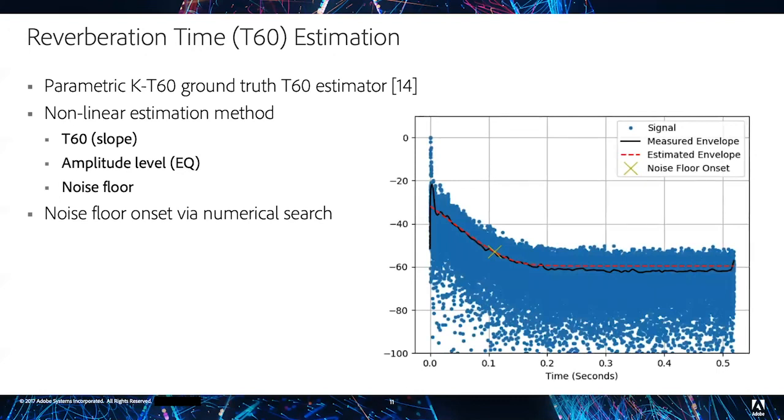To visualize this process, we show an impulse response on a log scale with blue dots, the measured amplitude envelope with a black line, the estimated parametric representation of the IR with a red dotted line, and the noise floor onset time with a yellow X.